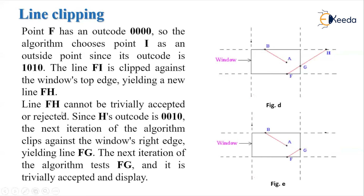Line FH is tested but cannot be trivially accepted or rejected because point H has outcode 0010, which is non-zero, so H is outside. We clip this point and find the new intersection with the window edge, which is point G. Finally, we have line FG where both F and G have outcode 0000, so it is trivially accepted, visible inside the window boundary, and displayed.